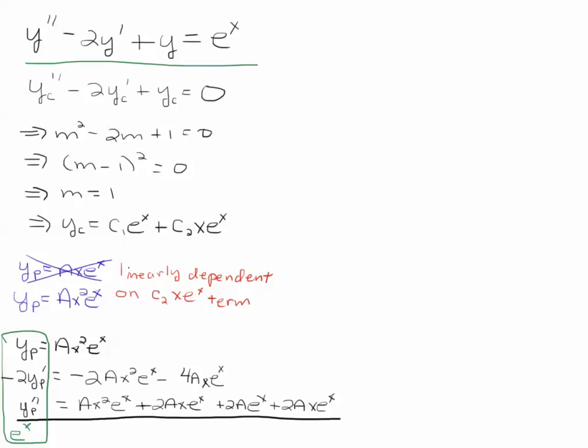So, here's how the cancellation works out. All these guys cancel out. And I'm just left with 2Ae to the x. And I match that up with the e to the x. And I match up the coefficients 2A with the 1. And I simply see that A is equal to 1 half.